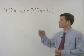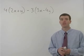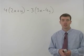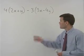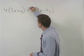To simplify the problem you see here, we're going to use both the distributive property and combining like terms. But before we do anything, we need to change these minus signs to plus negatives.